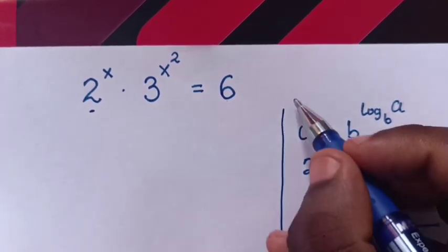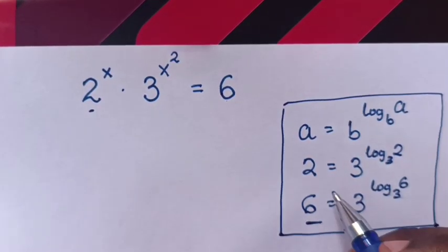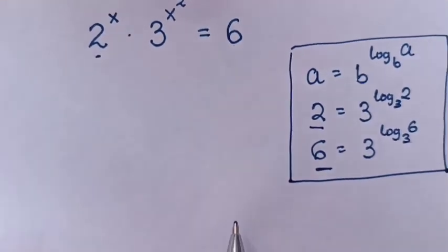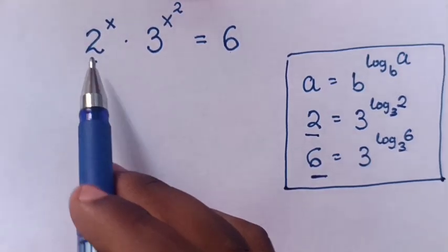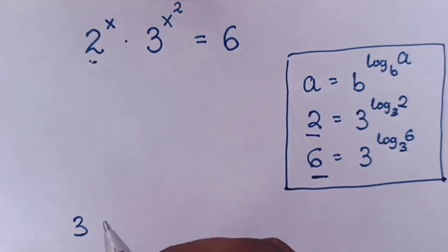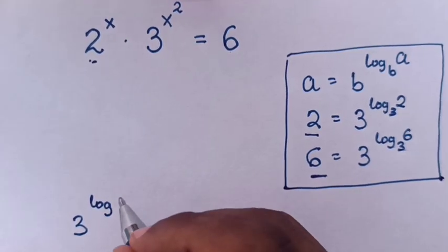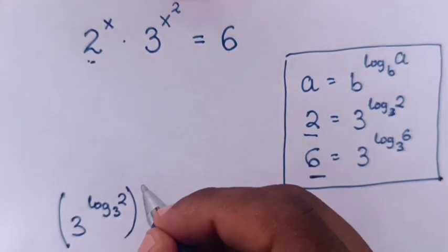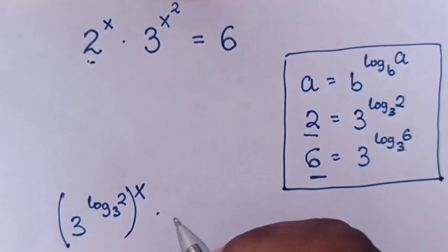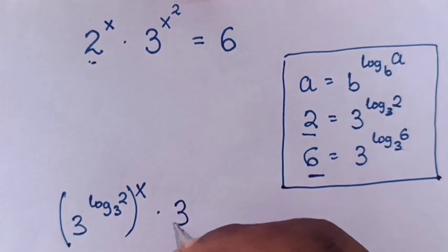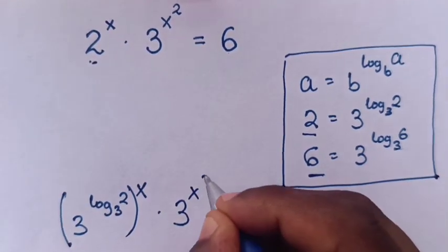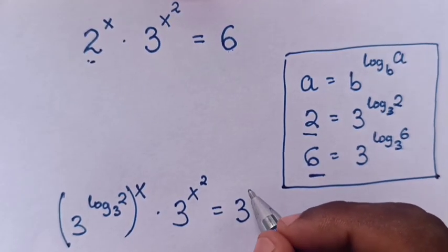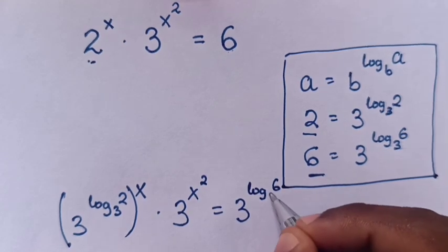So we substitute the value of 6 and the value of 2 in this logarithmic form in our equation. Our equation will have 2 substituted to be 3 log of 2 base 3, bracket power of x, times 3 power of x squared, is equals to 6. So the value of 6 is 3 log of 6 base 3.